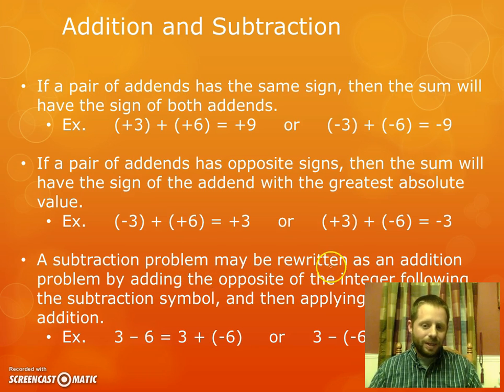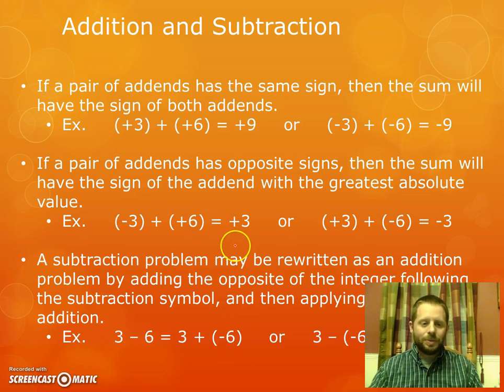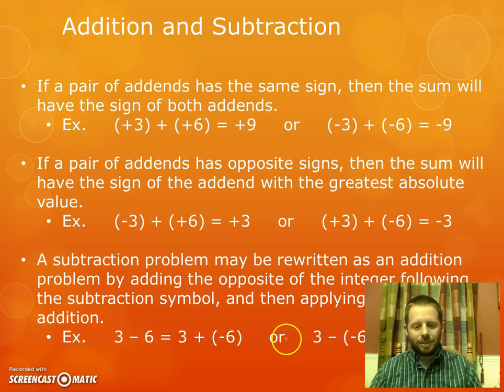Finally, this one says a subtraction problem may be rewritten as an addition problem by adding the opposite of the integer following the subtraction symbol. Then just apply the rules for addition. So this is a great way to eliminate subtraction from the problems and just deal with addition only. Here, the original problem was 3 take away 6. What this rule is saying is that can be rewritten as 3 plus negative 6. Again, you're changing the minus to a plus sign and you're changing the sign of the integer that follows it. So this was a positive 6, it's now a negative 6. You can do this with any subtraction problem. Here's another example. 3 take away negative 6. Again, I change the minus to a plus sign and I change the sign of the number that follows. So it was negative 6, so it's now positive 6. So this problem can be rewritten as 3 plus positive 6. I find that very helpful because then you're just having to learn the rules for adding if you change all your subtraction problems to addition problems.